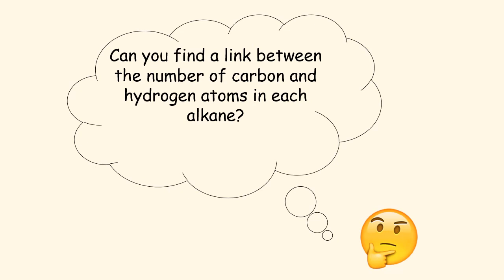Now we want to think about the general formula. Can you find a link between the number of carbon and hydrogen atoms in each alkane? To give you a clue: the first one was C₁H₄, the second was C₂H₆, and the third was C₃H₈. Can you think of a relationship between the number of carbon atoms and the number of hydrogen atoms in an alkane?